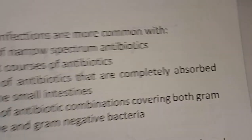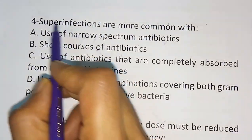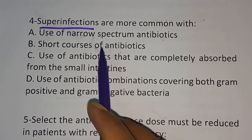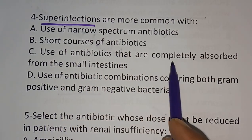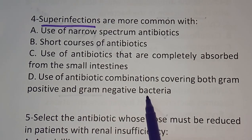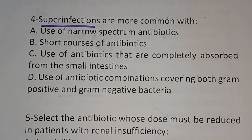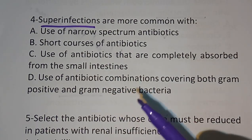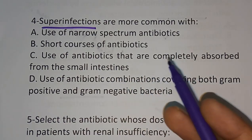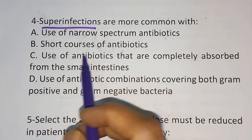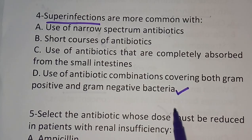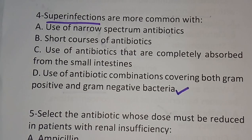Question number four: superinfections are more common with which of the following? Options are: (a) use of narrow spectrum antibiotic, (b) short courses of antibiotic, (c) use of antibiotics completely absorbed from the small intestine, (d) use of antibiotic combinations covering both gram-positive and gram-negative bacteria. Superinfections are the appearance of a new infection as a result of antimicrobial therapy. The correct answer is option (d) — use of antibiotic combinations covering both gram-positive and gram-negative bacteria.